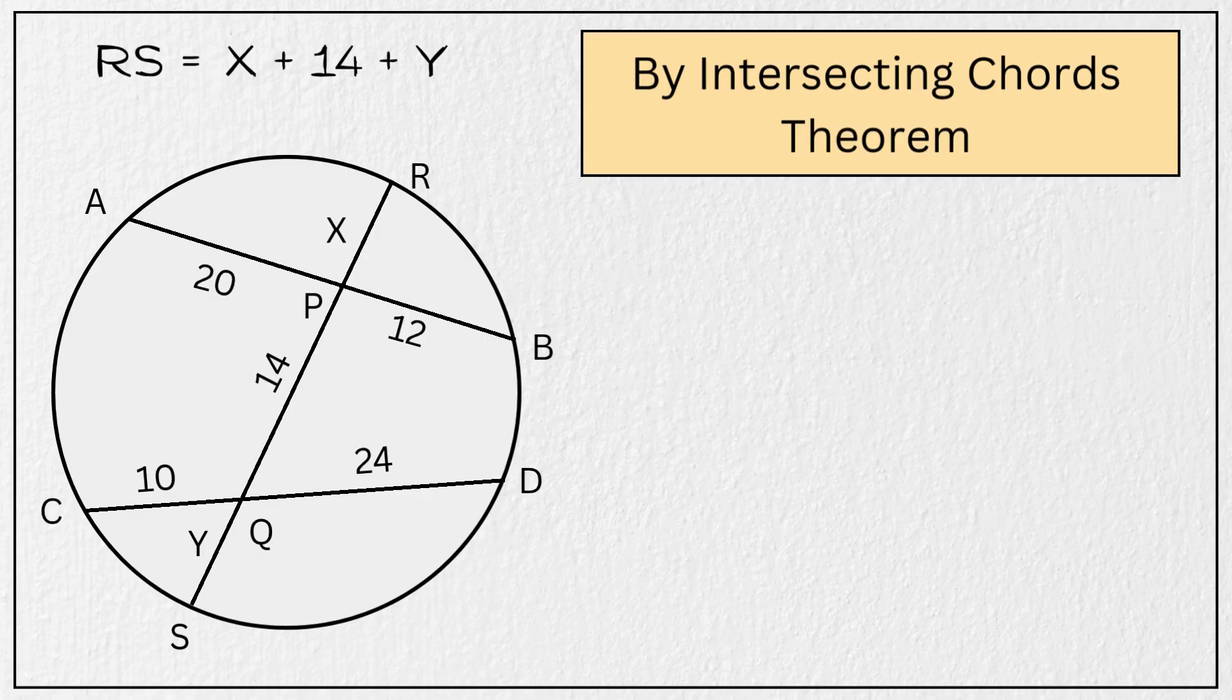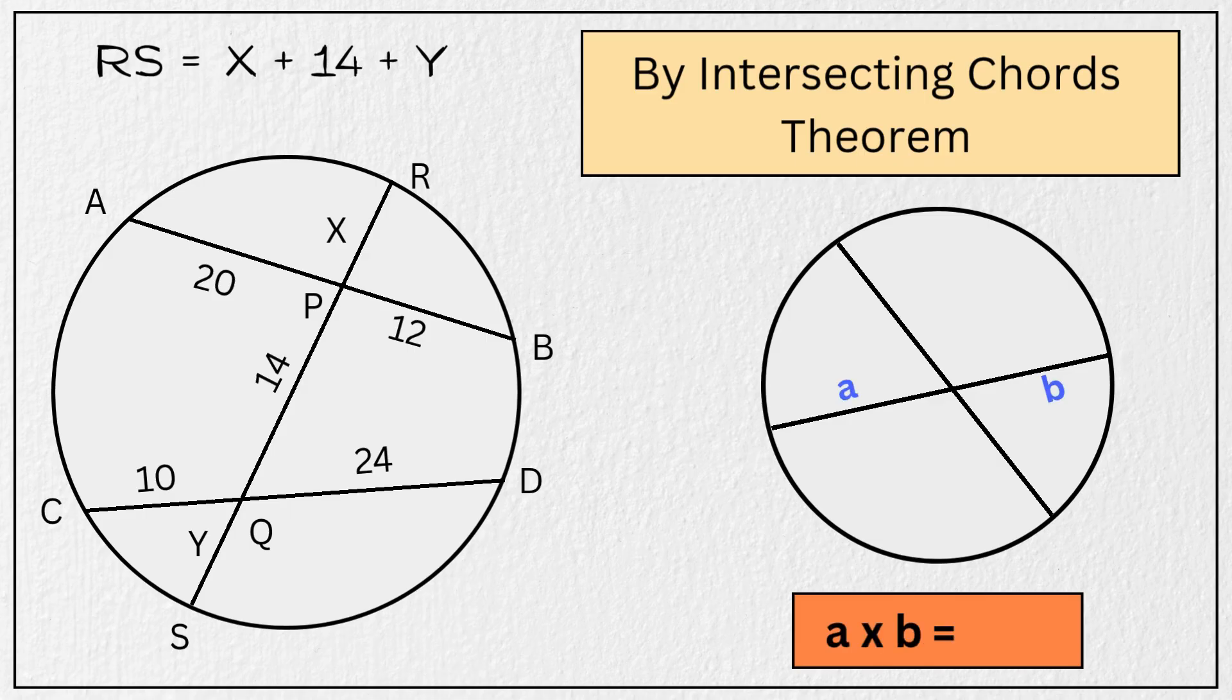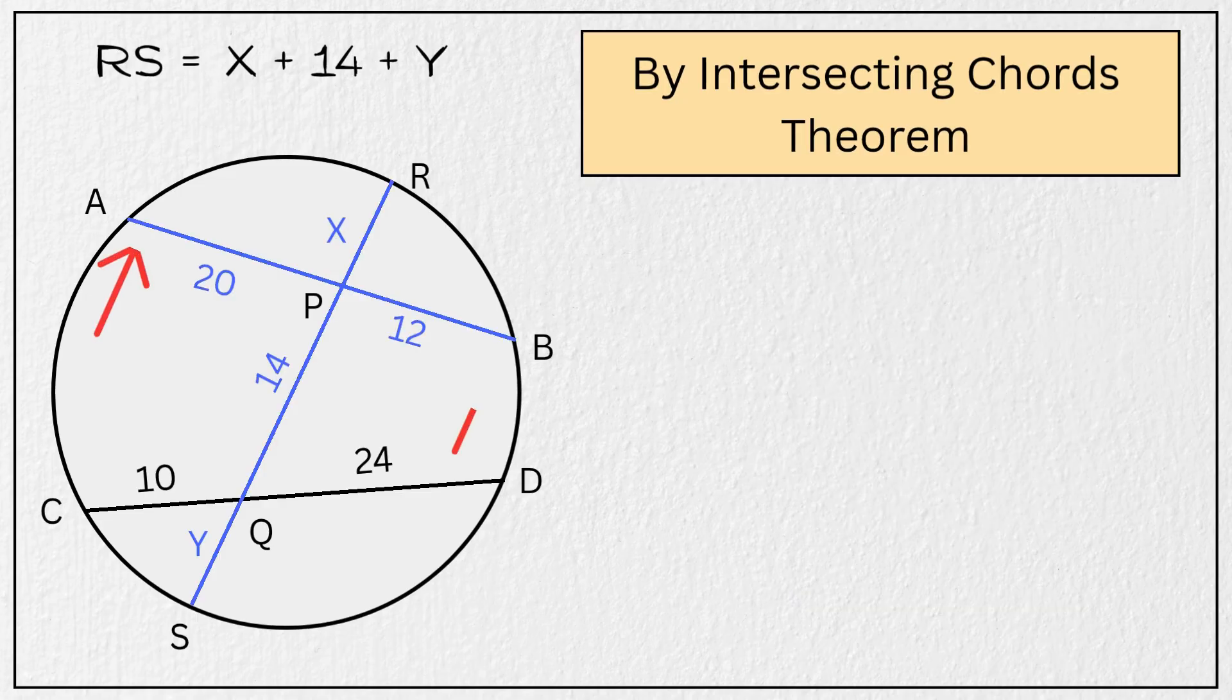According to intersecting chords theorem, when two chords intersect each other inside a circle like this, then the product of the two segments of one chord is equal to the product of the two segments of the other. So, applying this theorem to chord AB and chord RS, which intersect each other at point P, we get RP multiplied by PS equals AP multiplied by PB.